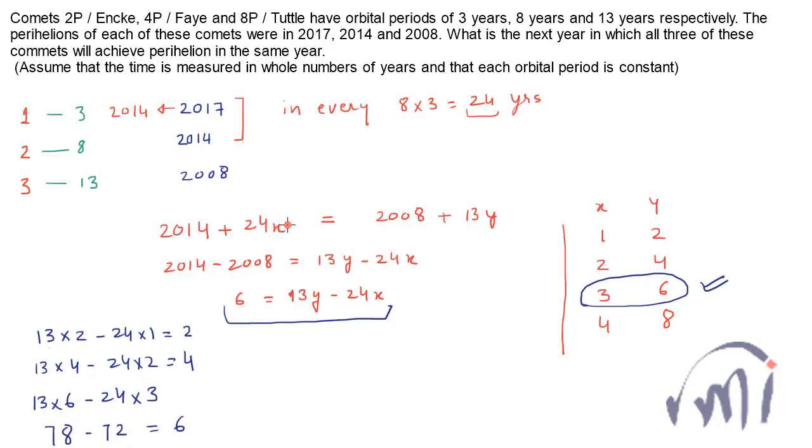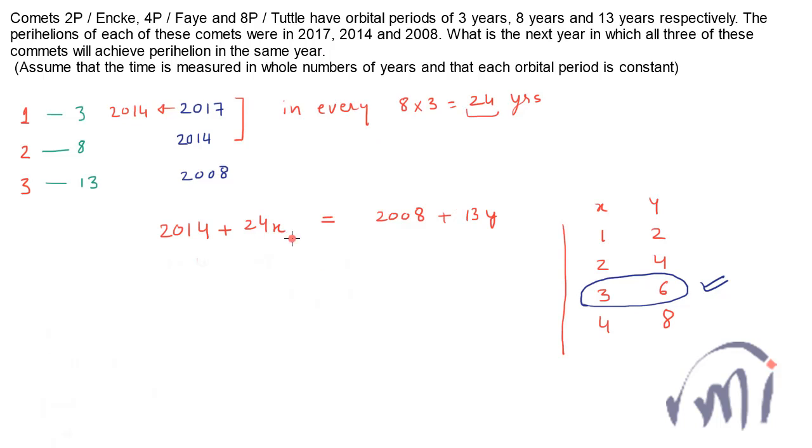I'll substitute the value of x which is 3 here and the value of y equal to 6 here. Both these expressions should have the same year, and that will be the year in which all of them will have their perihelion together.